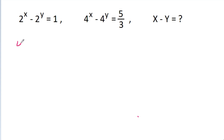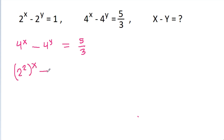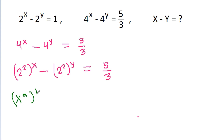So, we have 4 power x minus 4 power y is equal to 5 by 3, and 4 is 2 square, so 2 square power x minus 2 square power y is equal to 5 by 3. And we know that x power a power b is equal to x power b power a.